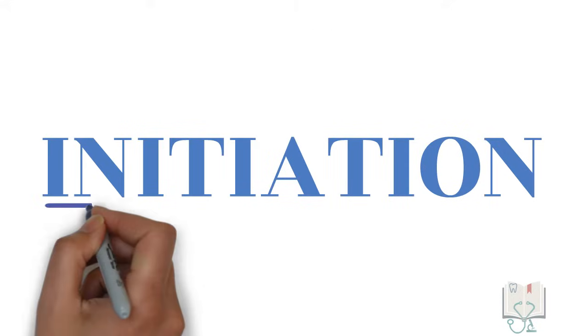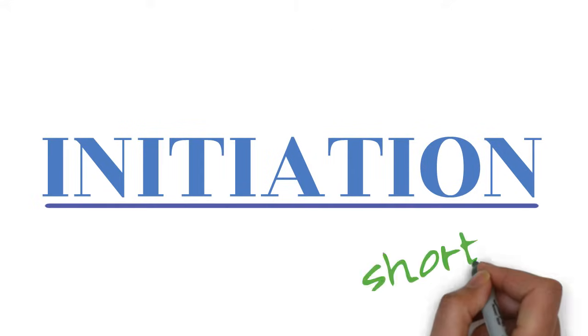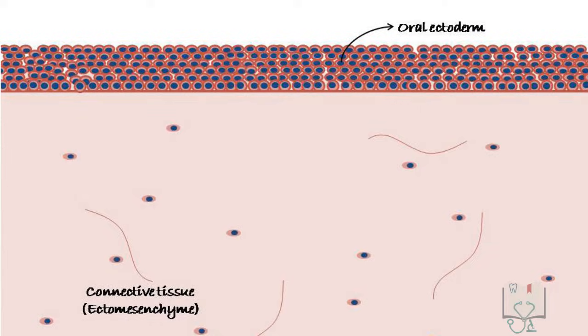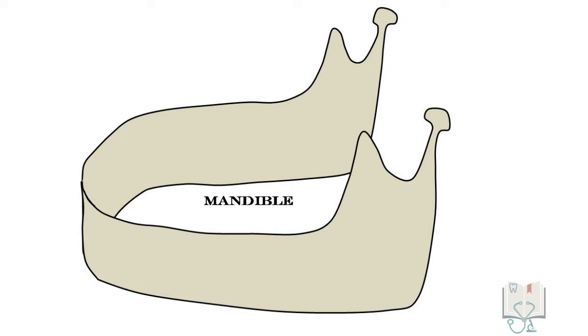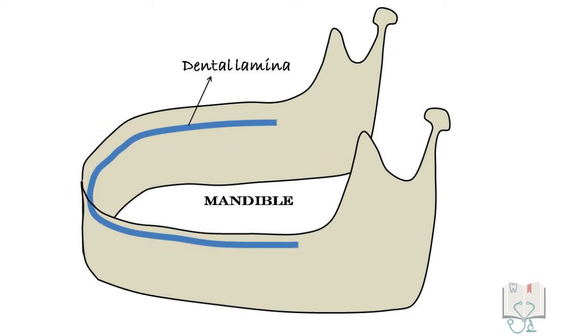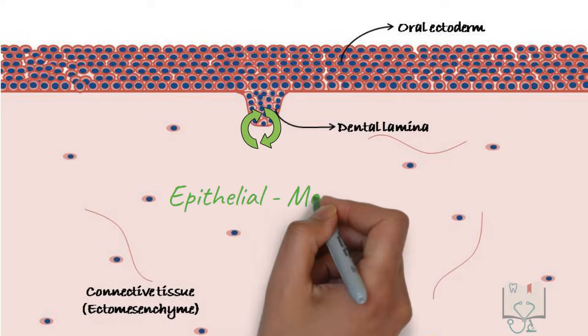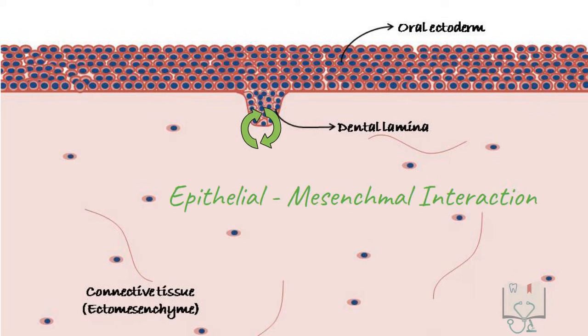The first stage is initiation. The stage of initiation is the shortest stage and is signified by the beginning of tooth development. The beginning of tooth development is considered to be associated with the dental lamina, which is the horseshoe-shaped extension of the oral ectoderm in the jaws. At some specific places, the cells form dental placodes. This initiation requires the interaction of epithelium and ectomesenchyme.